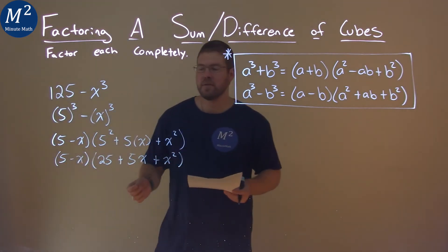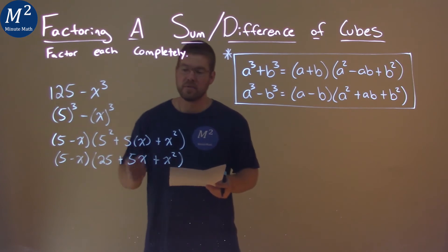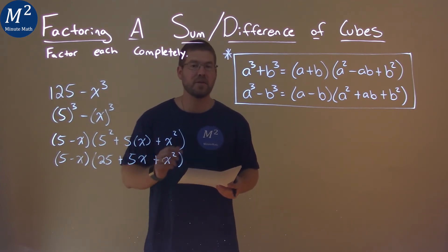And so our final answer is just 5 minus x times 25 plus 5x plus x squared.